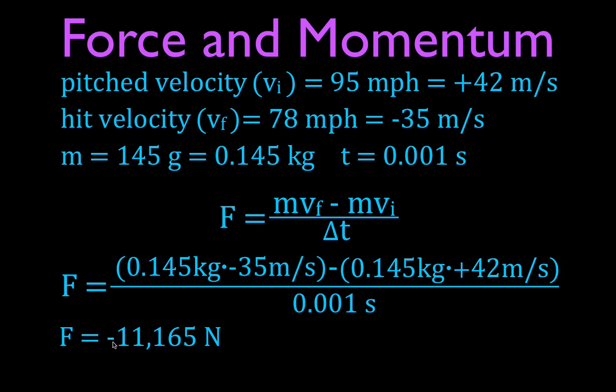The force is negative because it's applied in the negative direction — the direction the ball is being hit, which is away from the batter. That is the amount of force applied to a baseball when a batter hits a 95-mile-per-hour fastball.